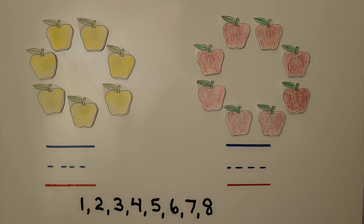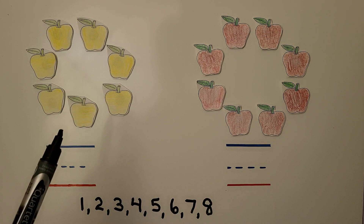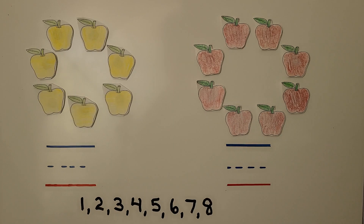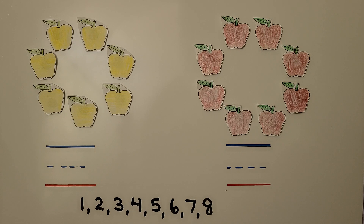Here is a set of yellow apples and a set of red apples. Which set contains the greater number of apples? That means which set has more apples? We can count them and write the number.